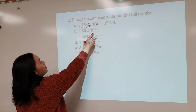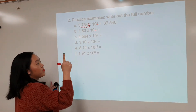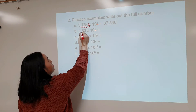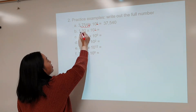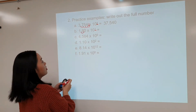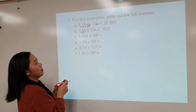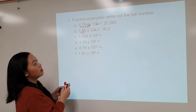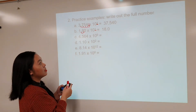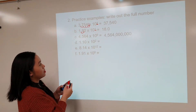Next example — same thing. The exponent 1 tells you to move the decimal 1 place over. The decimal is right here, you move it 1 place over, and the answer is 18.0. Here are the answers for the rest of these examples.